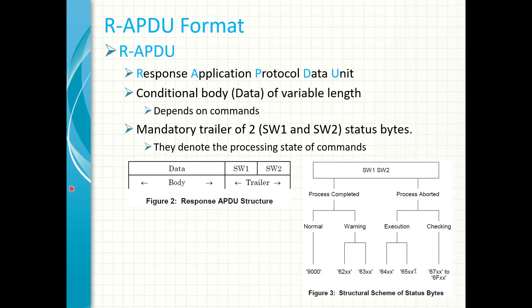Now, the response APDU format. Similar to the command APDU, it is made up of two main parts: the body and the trailer. The body is a conditional part that depends on the command, and the trailer is made up of two status bytes. After a command is sent, the card responds with data if expected, and also a status. In most cases you'll see either a normal successful status of 9000, or a response with a warning starting with status byte 62 or 63 — we'll get into the meanings of those in later demos.